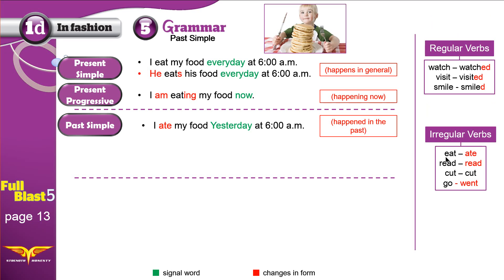Sometimes we change irregular verbs completely — like 'go' and 'went.' There is not even a single letter in common. For regular verbs, we just add -ed: I watch TV every day → I watched TV last night; I visit my grandfather every day → I visited my grandfather last month; I smile at people → I smiled at the kid last week. For irregular verbs, like 'go,' I went to school yesterday.